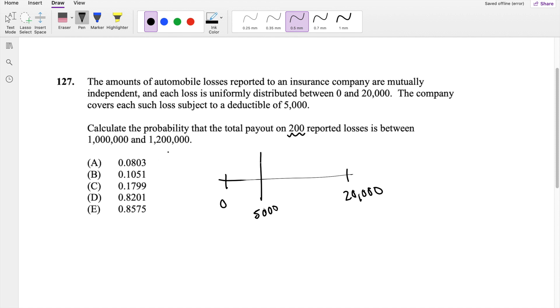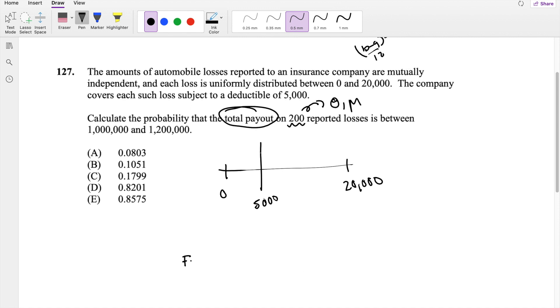First we have to find, because 200 is definitely greater than 20, we can apply the central limit theorem. But that means we need a standard deviation and we also need a mean. But then the thing is, we can't just take standard deviation for uniform distribution, because this is for the loss and we're looking for the total payout.